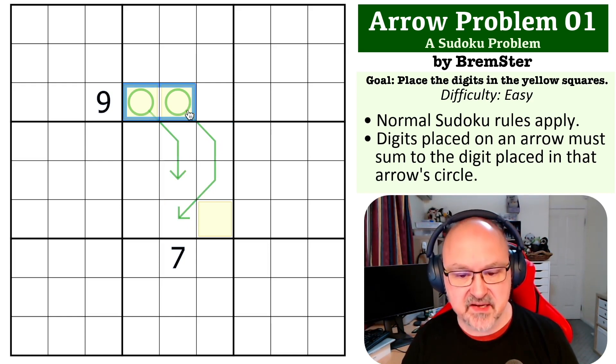So these have to be seven and eight, but we cannot put a seven into column five. So this becomes an eight and this becomes a seven.